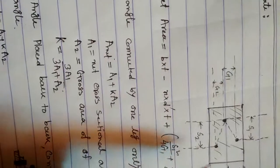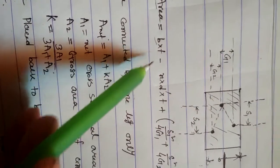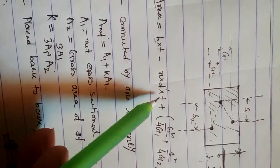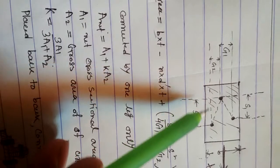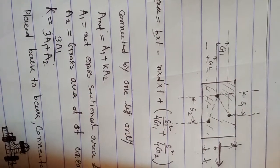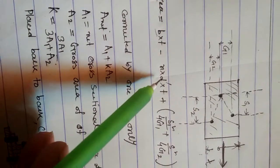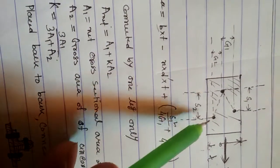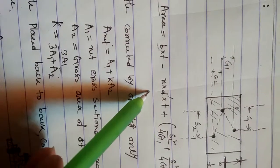The net sectional area for this plate will be: Net area = b × t, where b is the width of the section and t is the thickness, minus n × d' × t, where d' is the gross area of the bolt, plus s1² / 4g1 plus s2² / 4g2. This is the formula for finding the net sectional area for a plate.